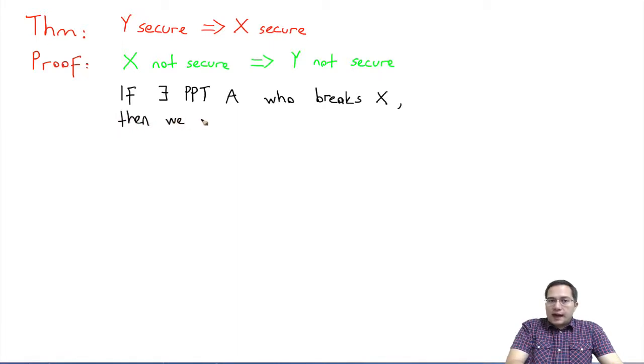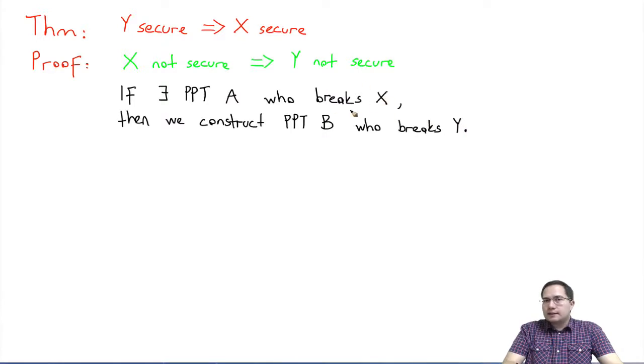If that's the case, then in the proof we construct another PPT adversary B who is going to break Y. So if A breaks X, B is going to break Y. This is very important - we are performing a constructive proof here.